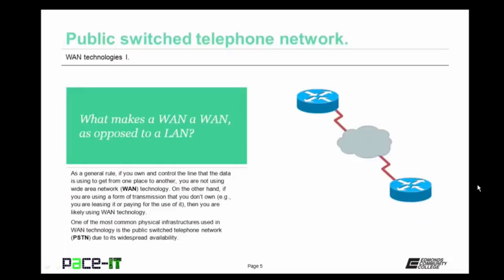Before discussing the public switched telephone network, let's talk about what makes a WAN a WAN as opposed to a LAN. As a general rule, if you own and control the line that the data is using to get from one place to another, you are not using a wide area network or WAN technology. On the other hand, if you are using a form of transmission that you don't own — such as leasing a line or paying for the use of it — then you are likely using WAN technology. One of the most common physical infrastructures used in WAN technology is the public switched telephone network, or PSTN, due to its widespread availability.